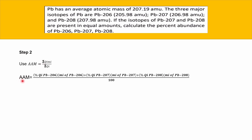For this question, the average atomic mass equals: the isotopic abundance of Pb-206 times its isotopic mass, plus the isotopic abundance of Pb-207 times its isotopic mass, plus the isotopic abundance of Pb-208 times its isotopic mass.